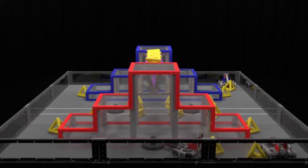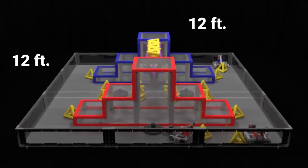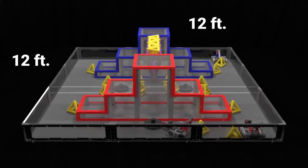Champions Bridge is played on a 12-foot by 12-foot field by two alliances, one red and one blue, made up of two teams each.